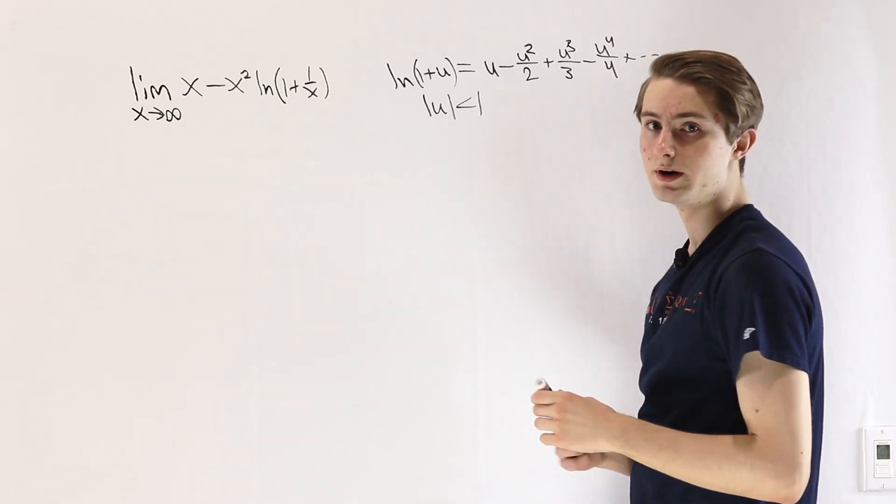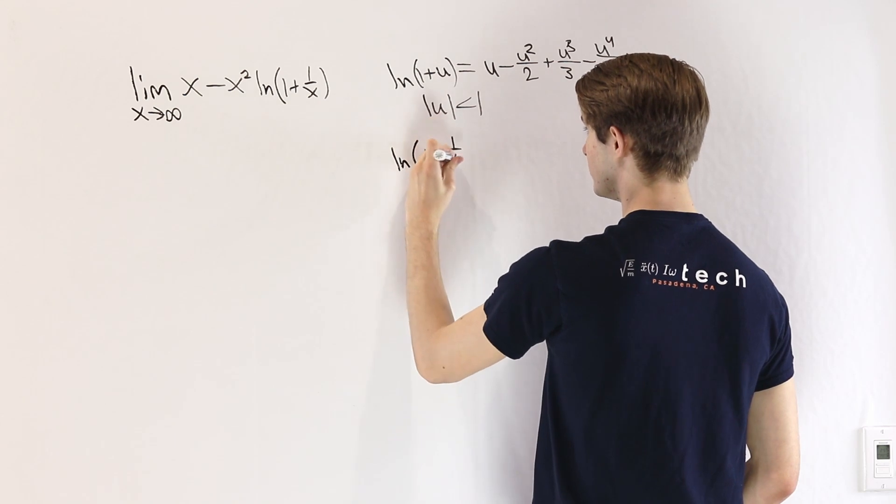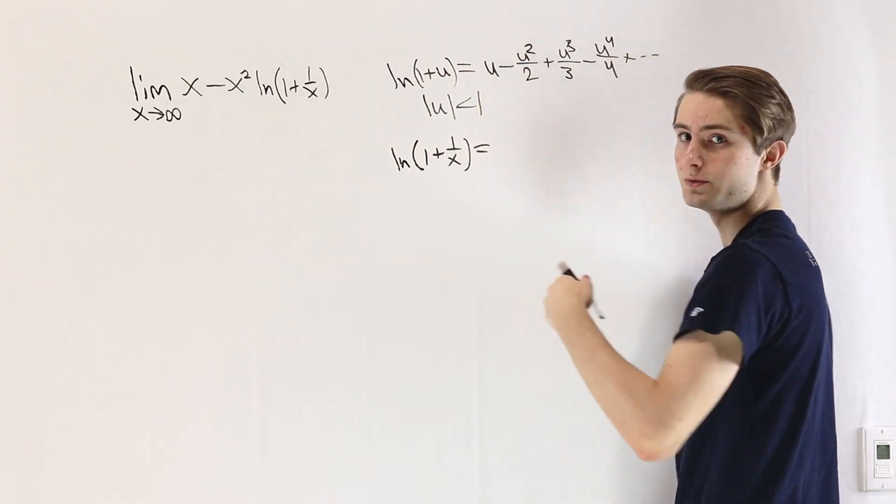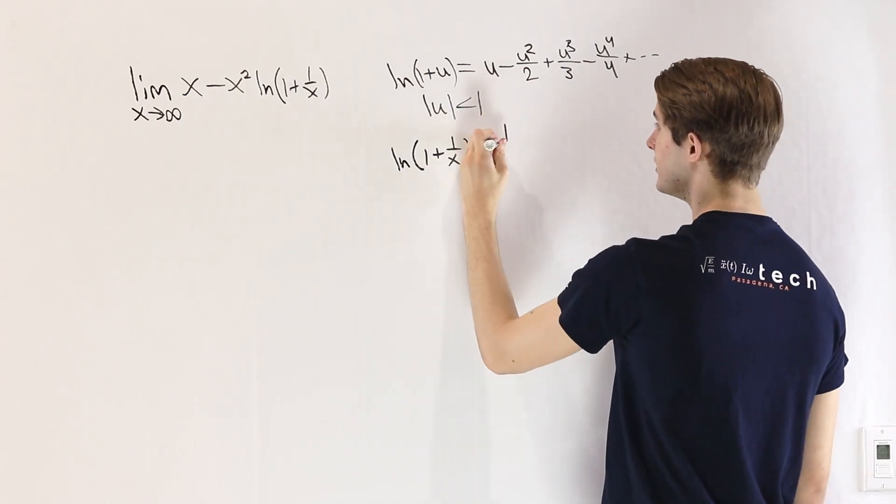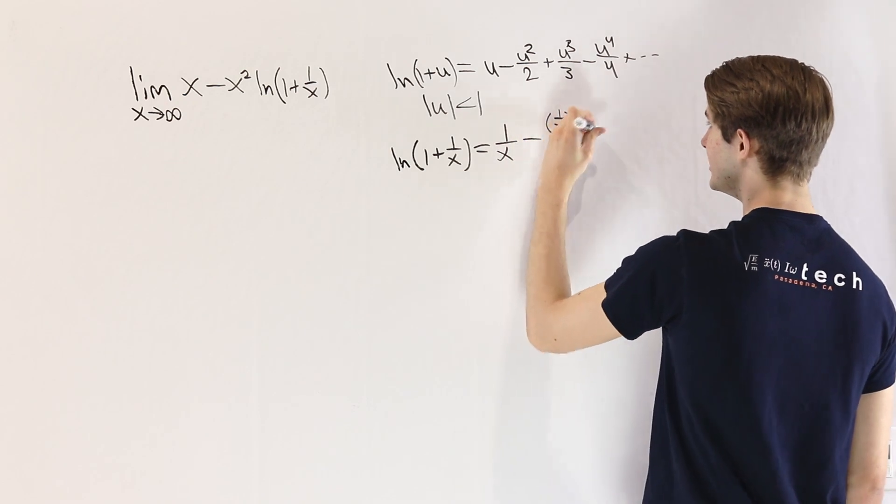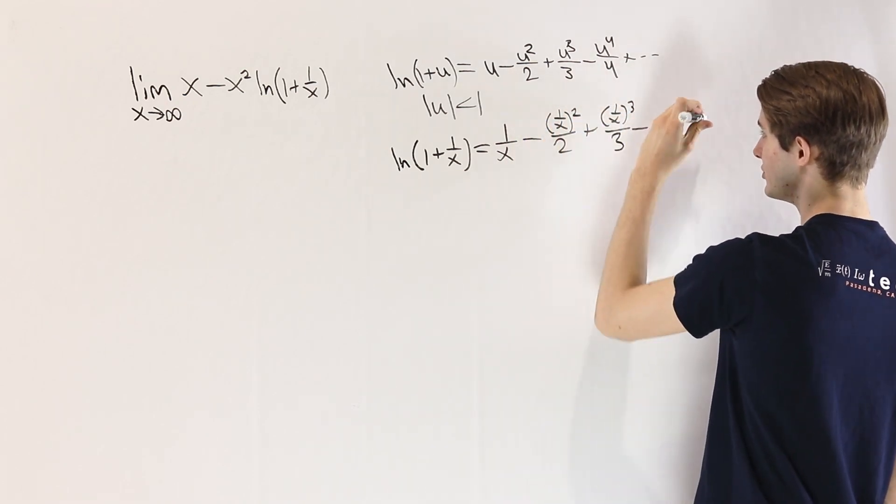So, if we're plugging in 1 plus 1 over x on the inside, we have that the natural log of 1 plus 1 over x equals, well, everywhere we see a u, we just put 1 over x instead. So 1 over x minus 1 over x squared over 2 plus 1 over x cubed over 3 and so on.